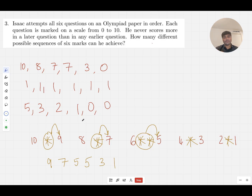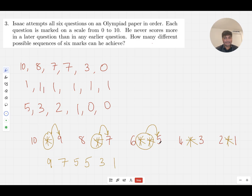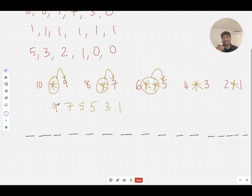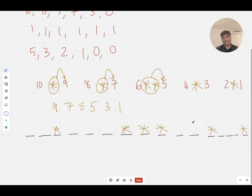All I need to ask is: how many different ways are there to place these six stars amongst these numbers? The answer turns out to be 16 choose 6. Think of 16 spaces. I need to choose six of these to be the stars — it doesn't matter which six. Let's say I choose this one, this one, this one, this one, this one, and this one. There are 16 choose 6 ways of doing that.